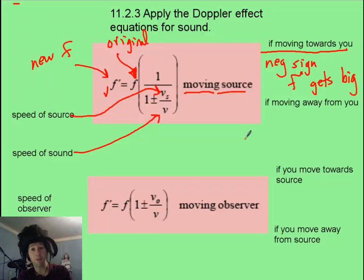If it's moving away from you, then the wavelengths get more stretched out, the frequency that you hear is lower, and so you want to divide this by a larger denominator, which means a positive sign. And f prime is now going to be smaller.